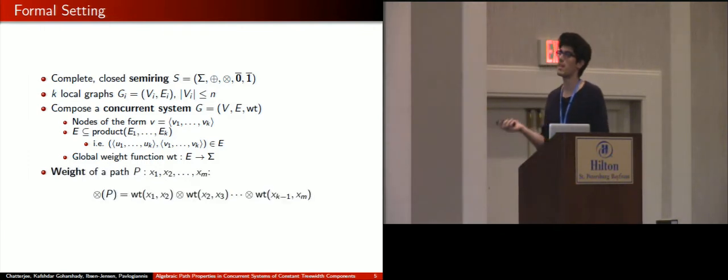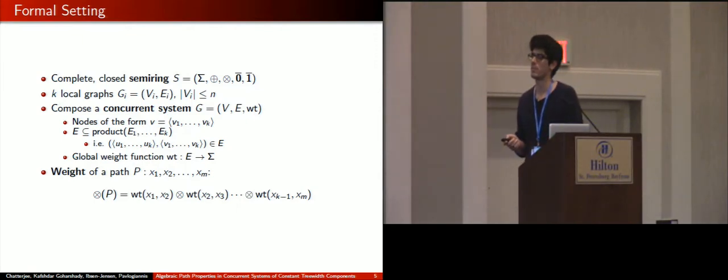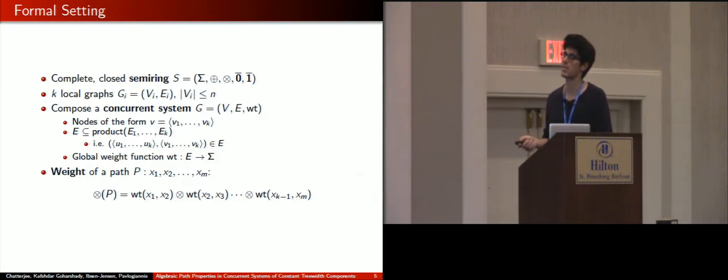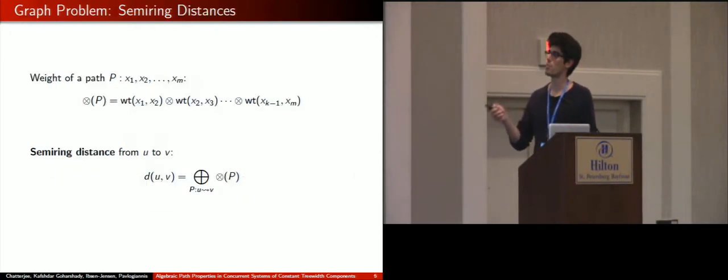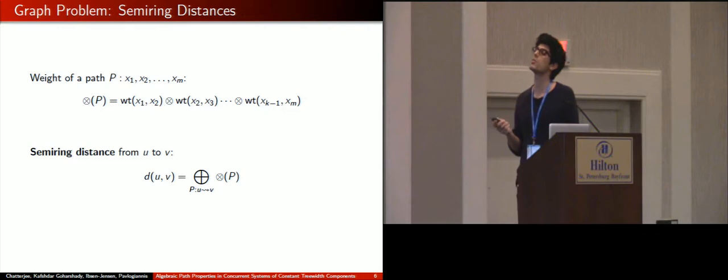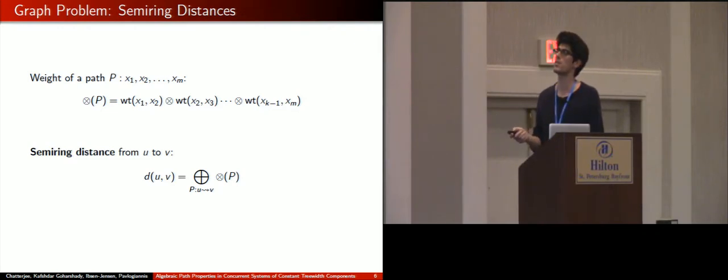Now, as usual, a trace or a path of the system is a finite sequence of nodes, and we obtain the weight of such a path by combining the weights that we see along its transitions using the semiring times operator. Fine. So now the problem that we are interested in is computing semiring distances, where a semiring distance from a node u to a node v of the system is taken to be the semiring plus of all the weights of paths that go from u to v.